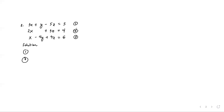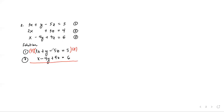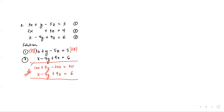We copy equation 1: 3x plus y minus 5z equals 5, and equation 3: x minus 4y plus 9z equals 6. Multiplying equation 1 by 4 gives 12x plus 4y minus 20z equals 20. Copy equation 3: x minus 4y plus 9z equals 6. Adding: 13x minus 11z equals 26. This is equation number 4.